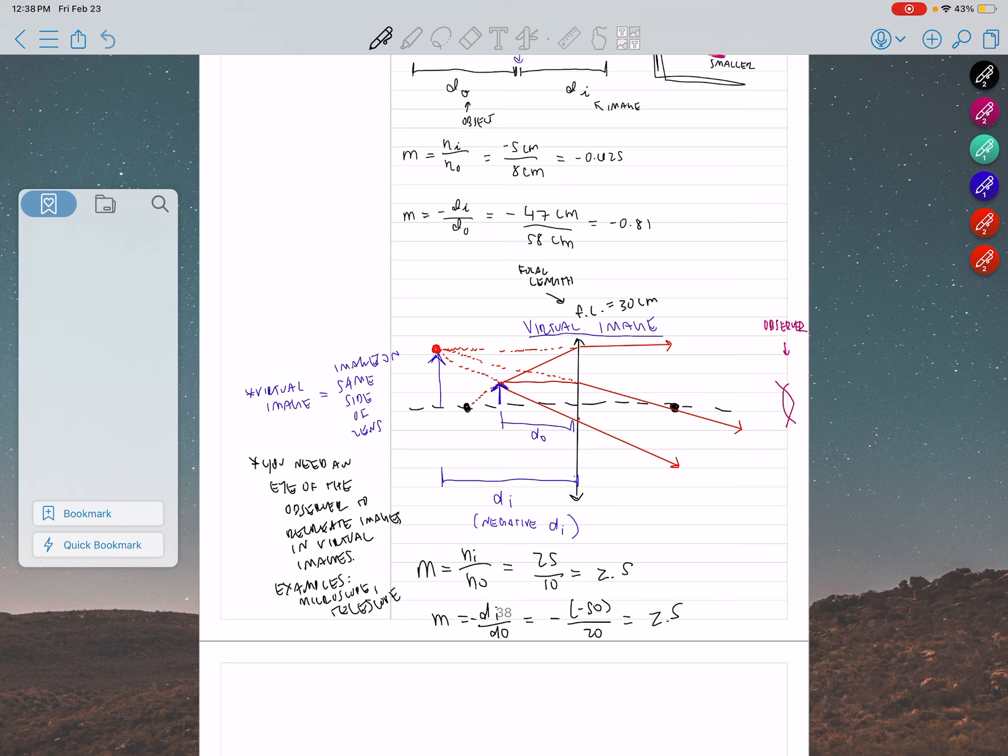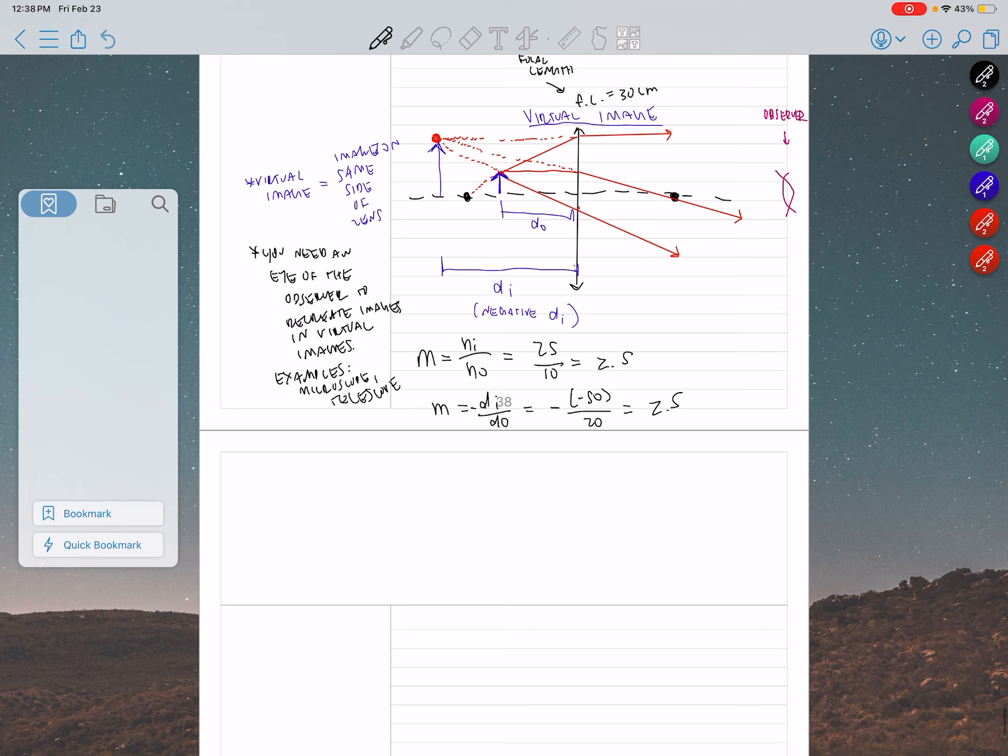Makes sense? Now, how do we know in terms of an optical system when I'm going to have virtual or real images? If your object is between the focal point and the lens, you're going to have virtual images. Always. If your object is to the left of the focal point, you're going to have real images. Always.